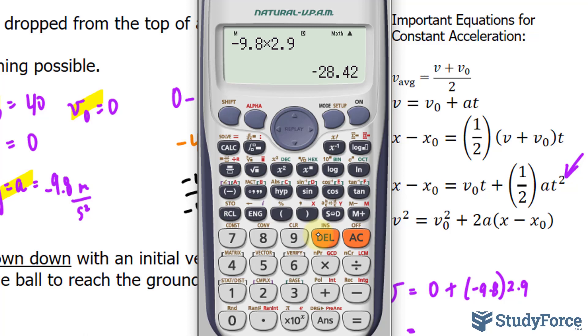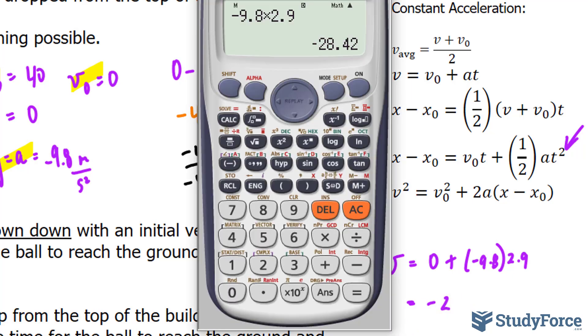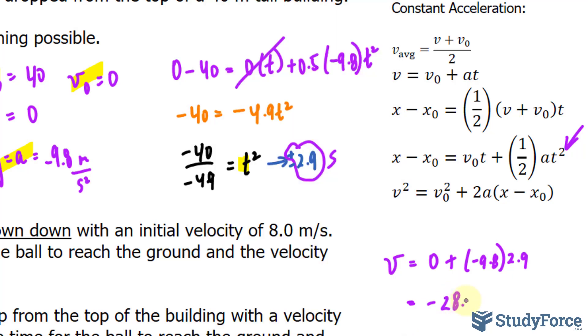The fact that it's negative means that it's going down, it's just taking into account the direction. So negative 28.42 or you can represent it with positive and then simply write down that it's going down, the direction over here.